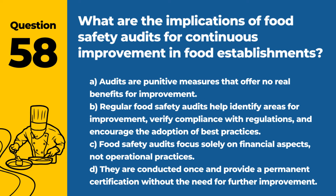Question 58. What are the implications of food safety audits for continuous improvement in food establishments? a. Audits are punitive measures that offer no real benefits for improvement. b. Regular food safety audits help identify areas for improvement, verify compliance with regulations, and encourage the adoption of best practices. c. Food safety audits focus solely on financial aspects, not operational practices. d. They are conducted once and provide a permanent certification without the need for further improvement. Answer: b. Regular food safety audits help identify areas for improvement, verify compliance with regulations, and encourage the adoption of best practices. Audits are a key component of a proactive food safety culture.